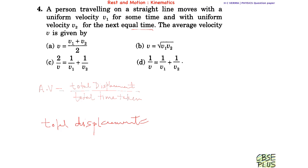We know that velocity v1 and velocity v2 are given. The person travels with velocity v1 for some time — let this time be t. The displacement for the first part would be v1 multiplied by t, because displacement equals velocity multiplied by time.